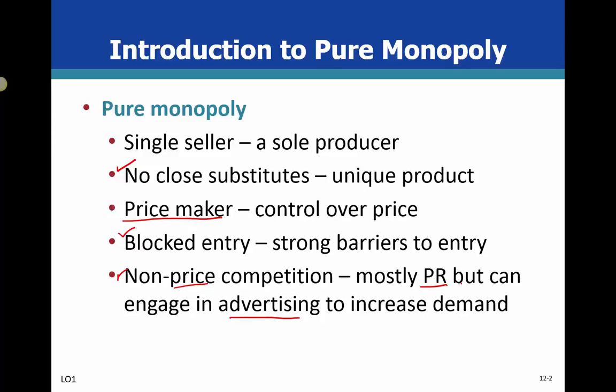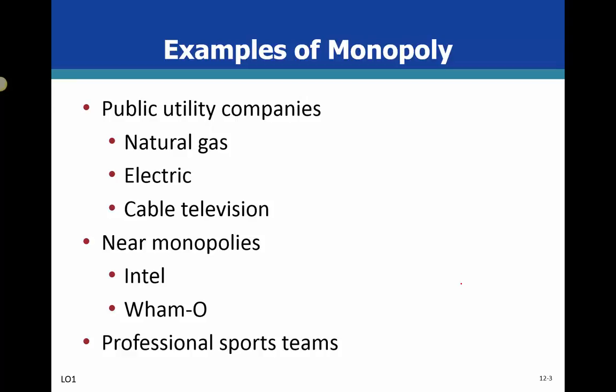The only real competition for a monopolist is non-price competition — things like advertising and public relations. Some examples include public utility companies like natural gas companies, electric companies like Idaho Power, and cable television companies like Cable One. These are regulated, so if they're public utility companies, they are monopolies in nature but they are regulated.